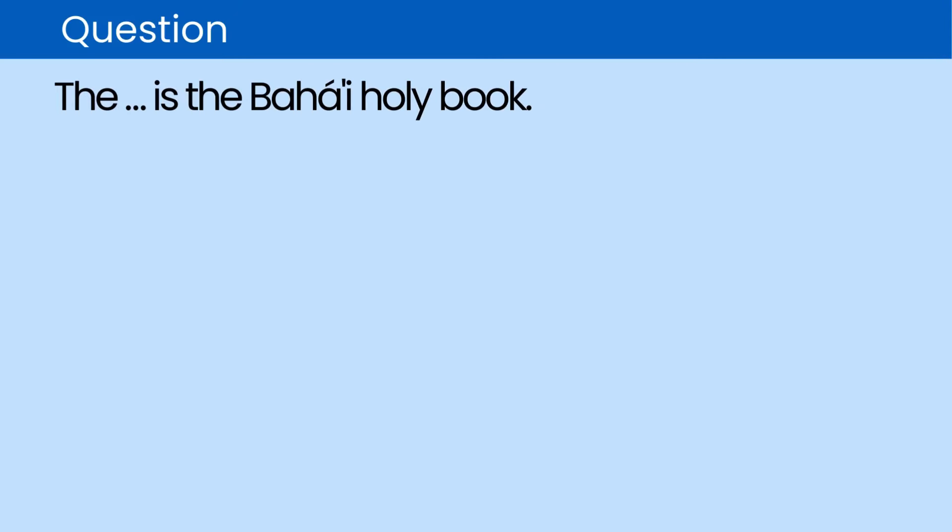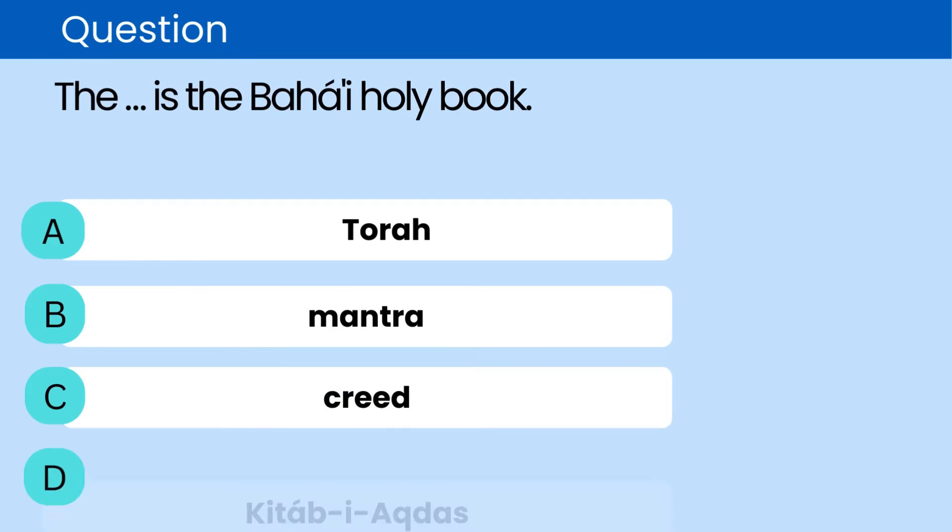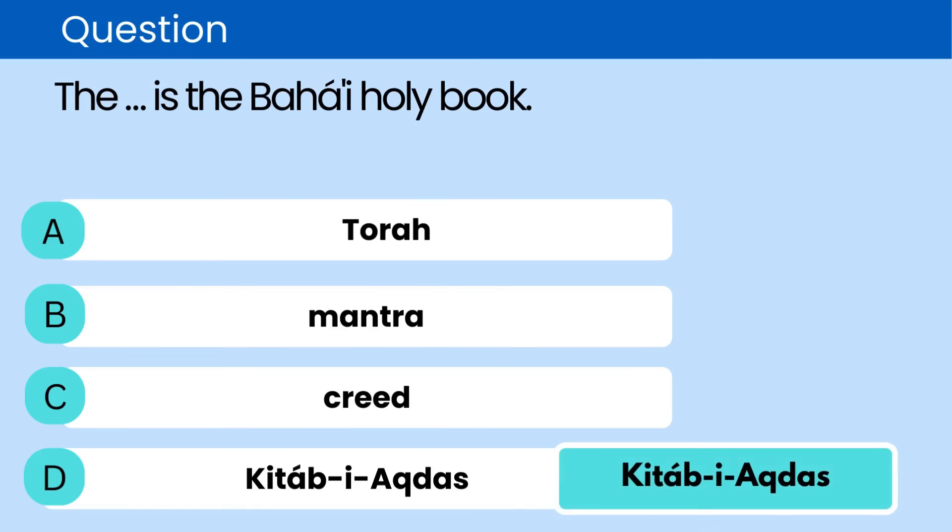Question: The Baha'i holy book is the. A. Torah. B. Mantra. C. Creed. D. Kitabayaktas. The correct answer is D. Kitabayaktas.